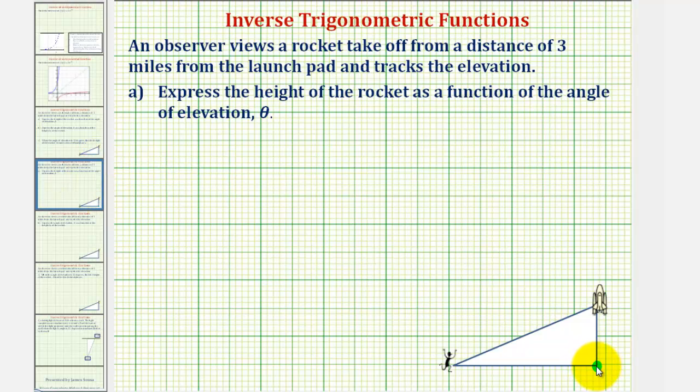If this is the launch pad and the observer views the takeoff from a distance of three miles away, the length of this side would be three miles. Therefore, the length of this side of the right triangle would be the height of the rocket, which we'll label H.